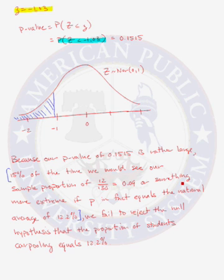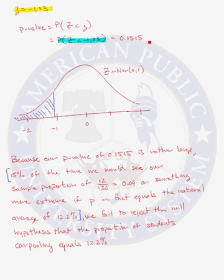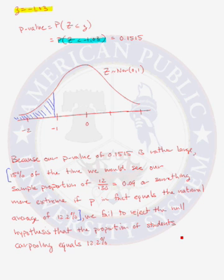Even when you use the calculator to find your test statistic and P-value, you still want to sketch the P-value and finish with your English conclusion. Our English conclusion is: because our P-value of 0.1515 is rather large — meaning that 15% of the time we would see a sample proportion like 9% or something more extreme if the null hypothesis is true — we fail to reject the null hypothesis that the proportion of students carpooling equals 12.2%. The TI calculator can be used to help find the test statistic Z and the P-value, but all other steps must still be included in the problem.